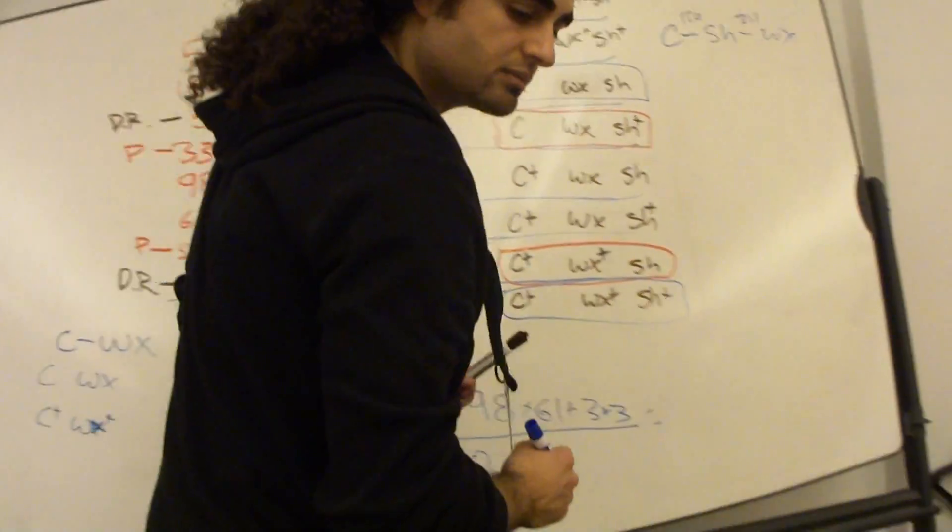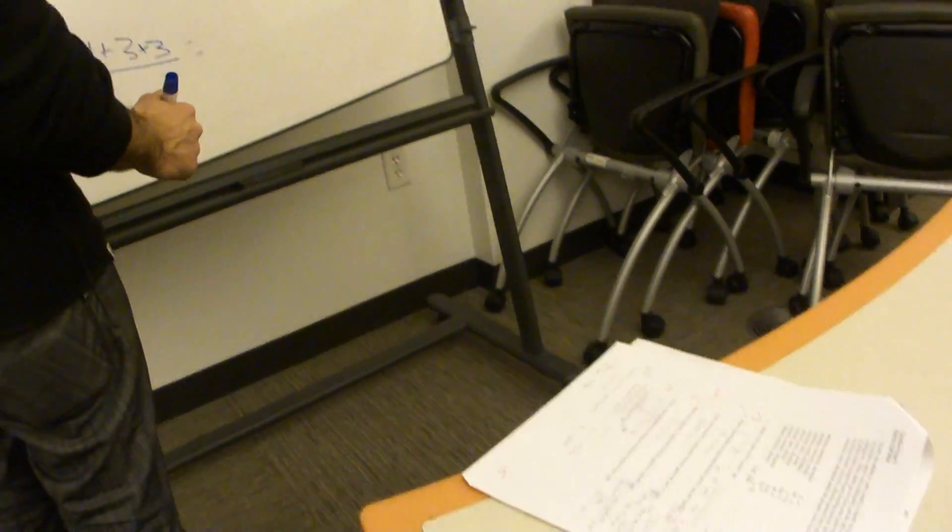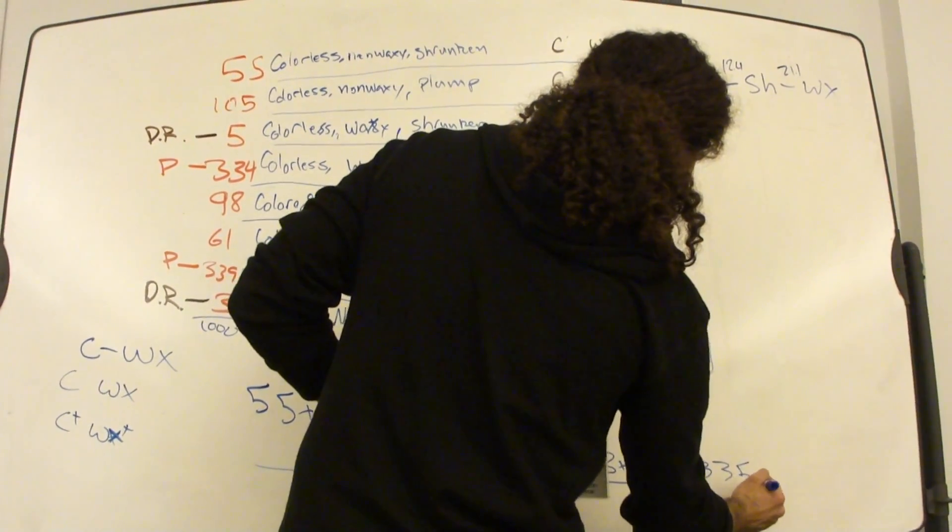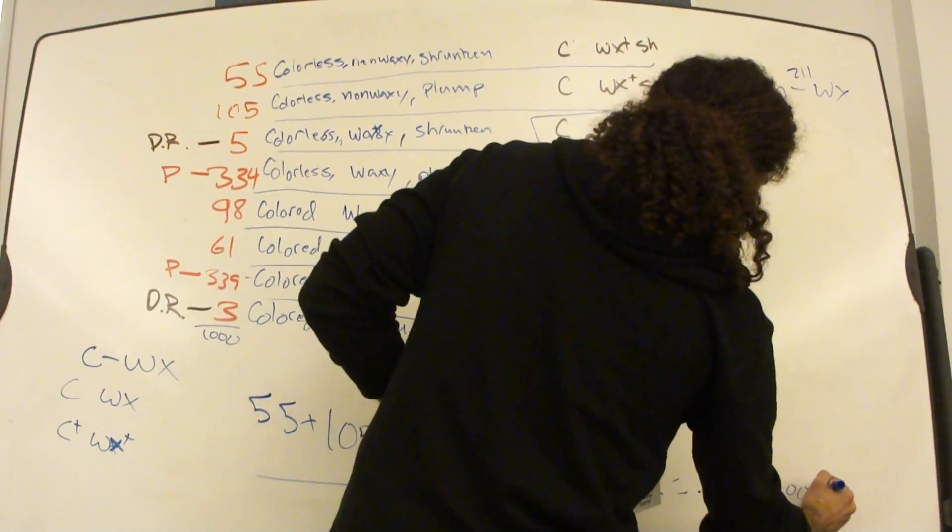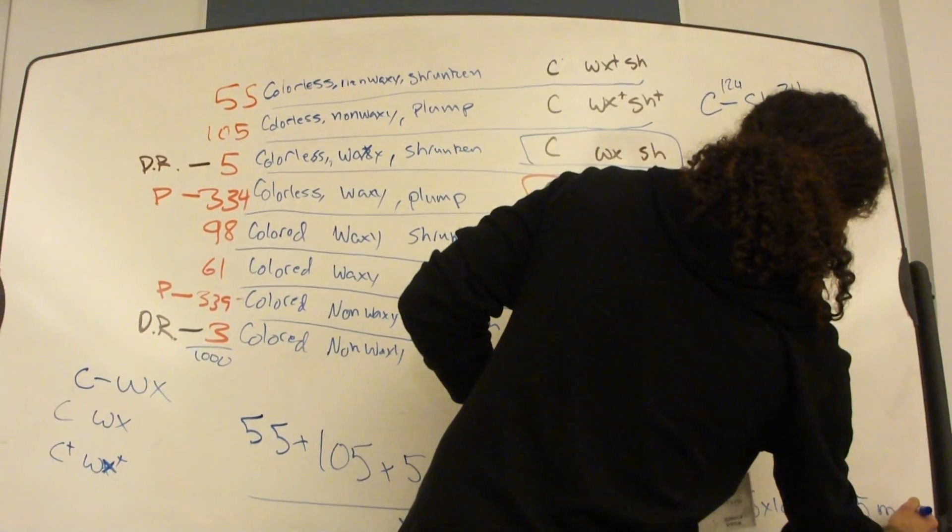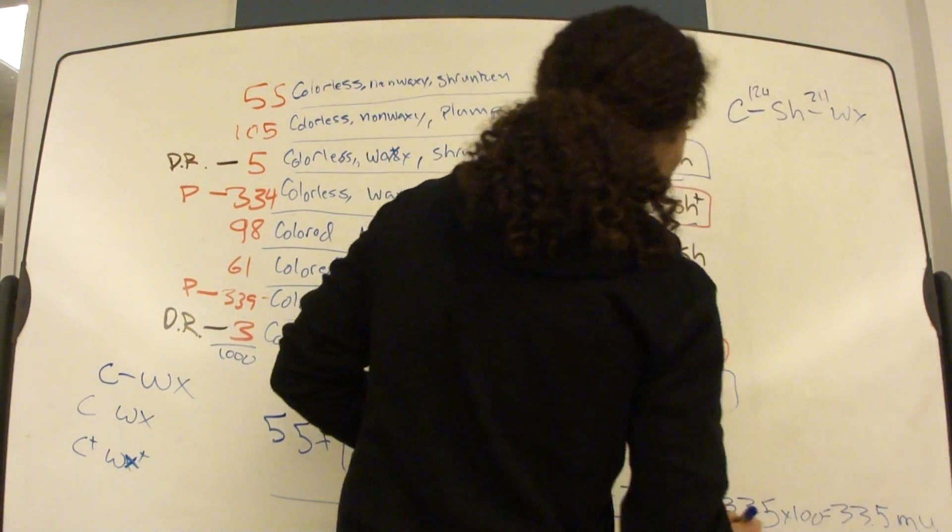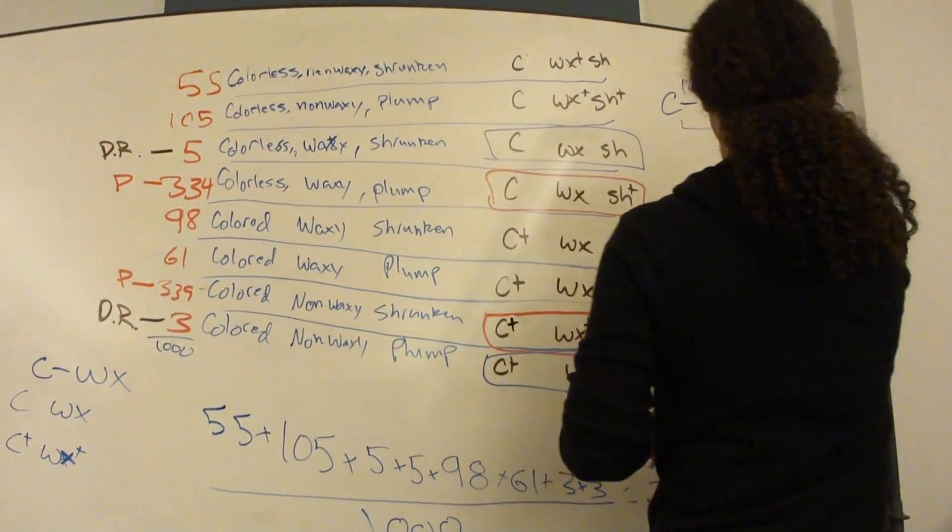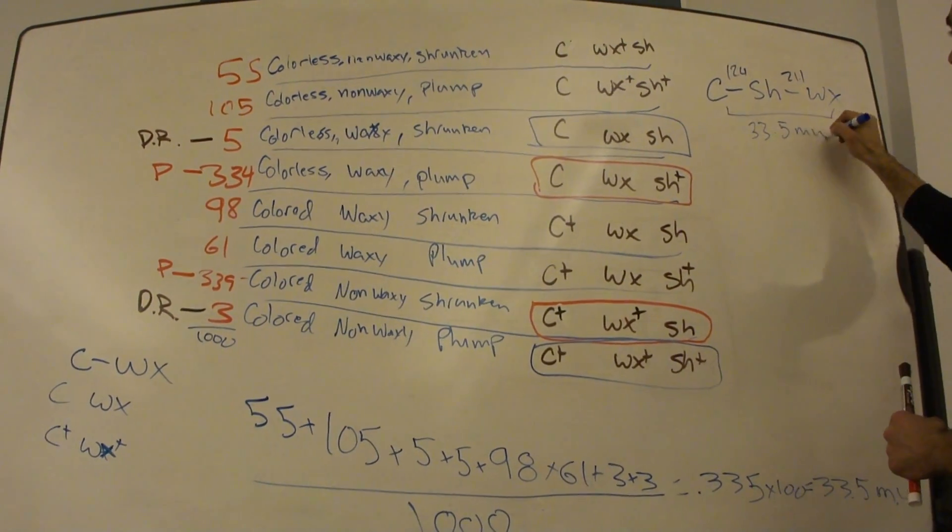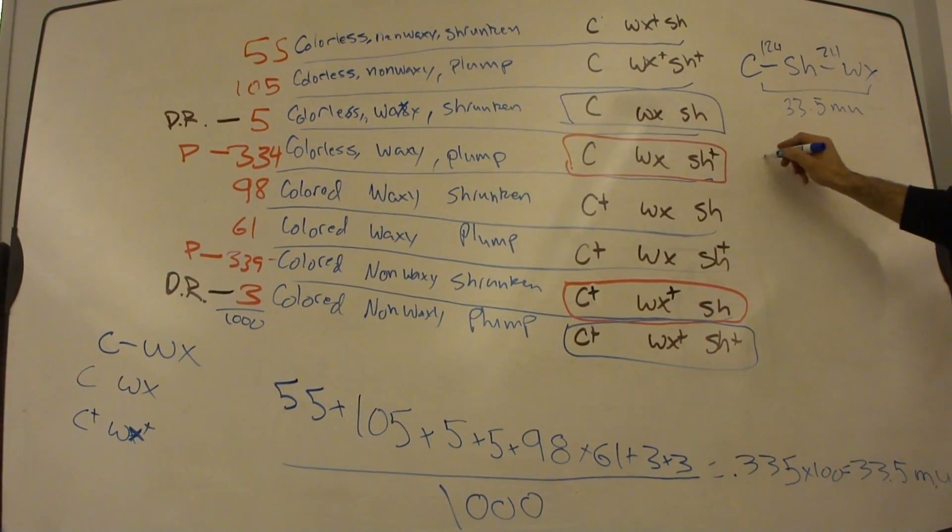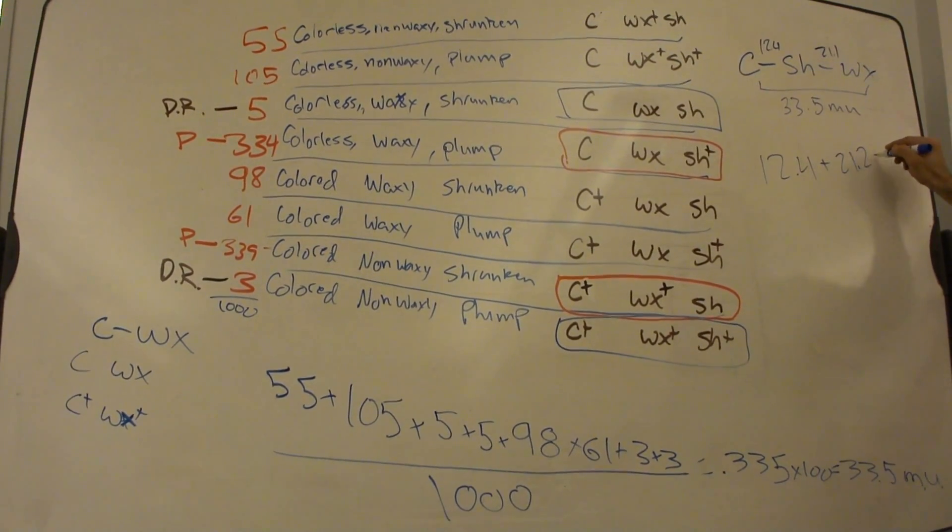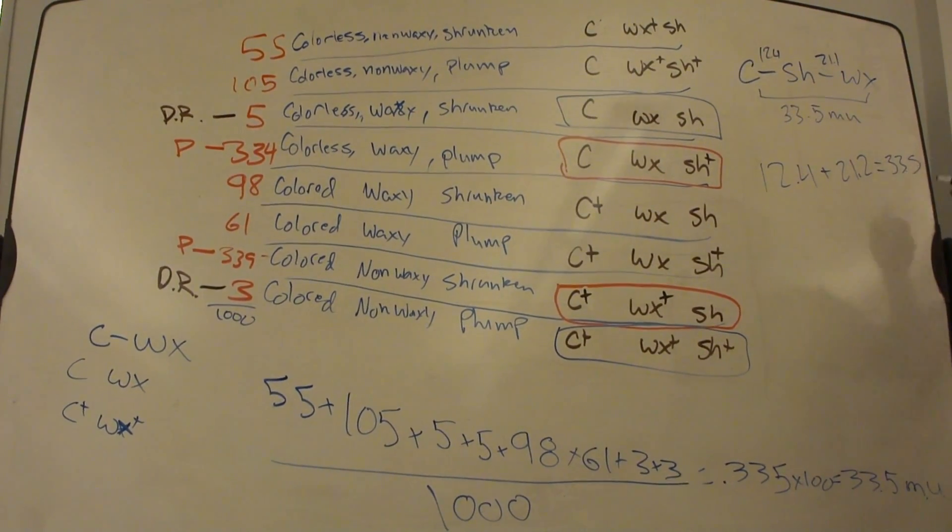Over a thousand. And that's going to, after we punch it in our calculator, say 33.5. So, 0.335 times 100, which is 33.5 map units. And, so we know the distance between the two furthest genes is 33.5 map units, which, luckily, equals 12.4 plus 21.1. So, we know we did it right.